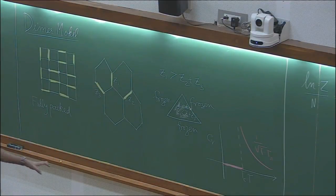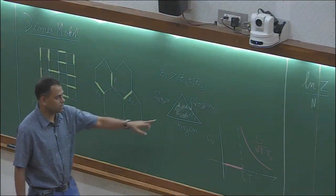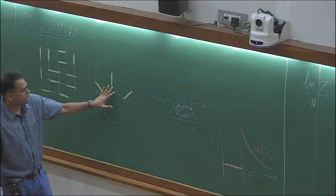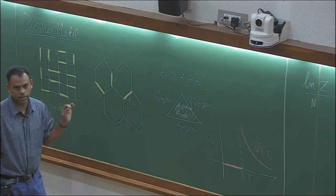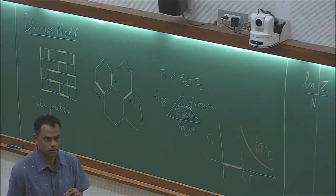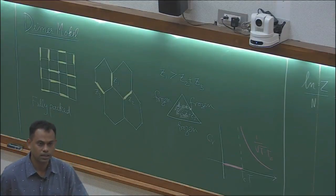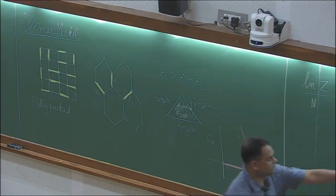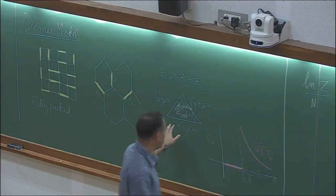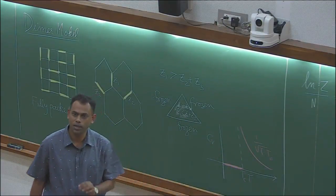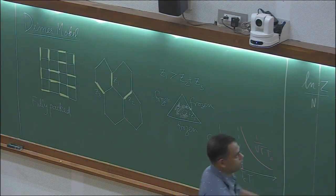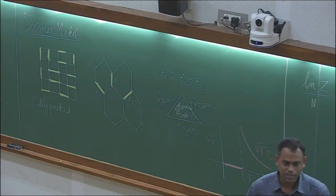For the honeycomb lattice, if all the z's are equal, you have a disordered phase. Otherwise you have a frozen phase, in which all dimers point in the z1, z2, or z3 direction depending on which one is larger — there is no fluctuation. The matrix M for this model is 2×2, but for more complicated lattices you need a more complicated M. How to write M depends on some additional structure involving arrows.